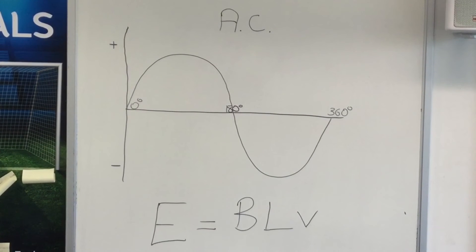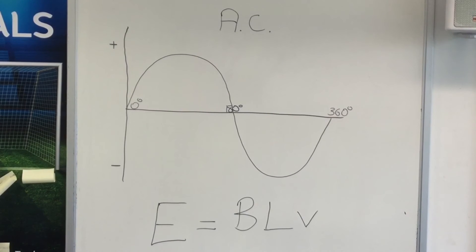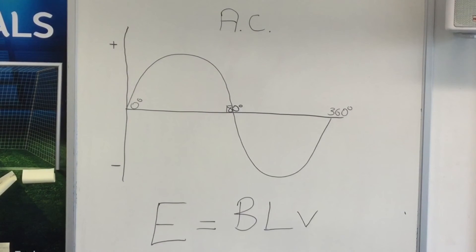We increased the EMF induced into our conductor when we increased the speed at which we were passing the conductor through the magnetic field, and when we increased the amount of copper that we were passing through the magnetic field.